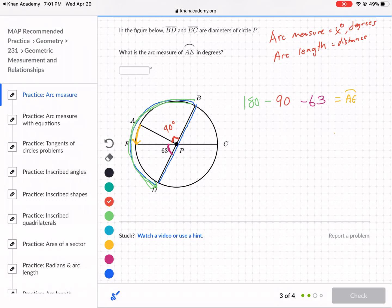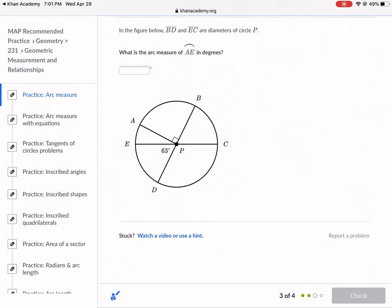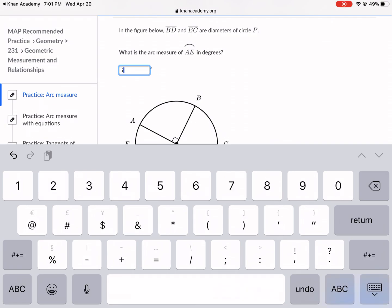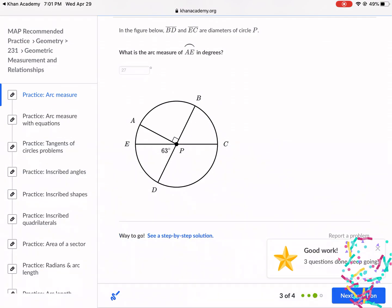So I'm just going to get my calculator, and I do 180, minus 90, minus 63, and I get 27 for my answer. It looks like that's about right, judging on the size, 27. Punch it. There we go.